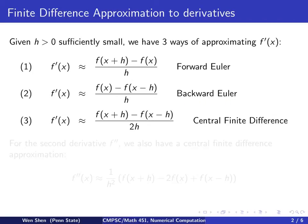Finally, there is a version that uses information from both sides. You take the value at x plus h, a little bit to the right, and then the value at x minus h, a little bit to the left. You look at the difference between these two function values and divide by 2h. This is called the central finite difference, where x lies in the middle between x plus h and x minus h.